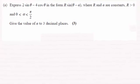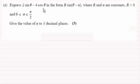Hi there. For this question we're asked to express 2 sin θ minus 4 cos θ in the form r sin(θ minus α), and we've got to calculate α to three decimal places.